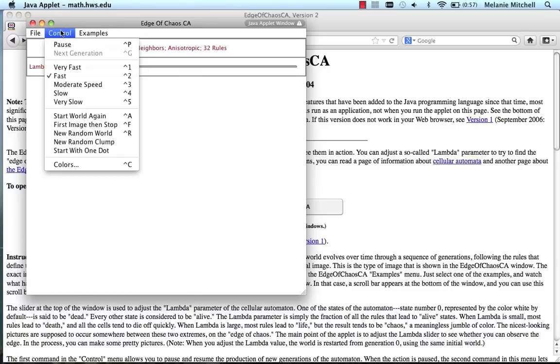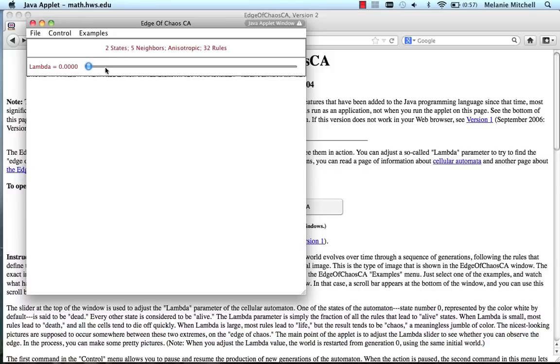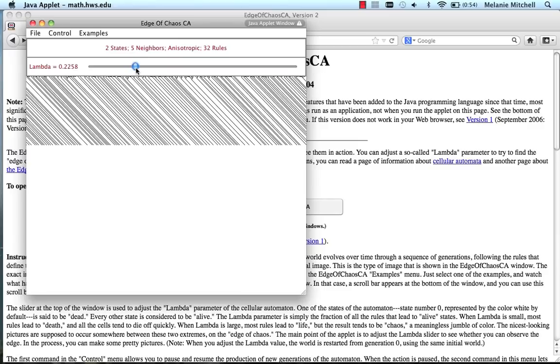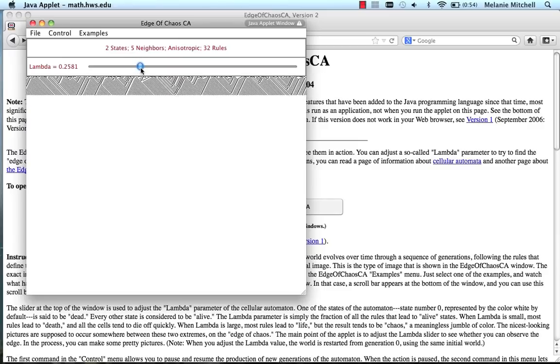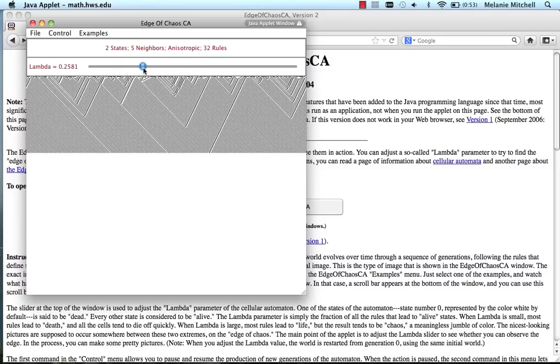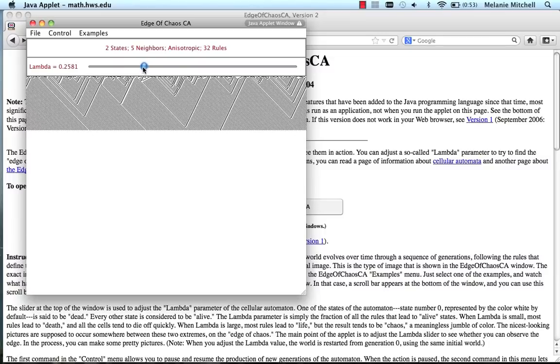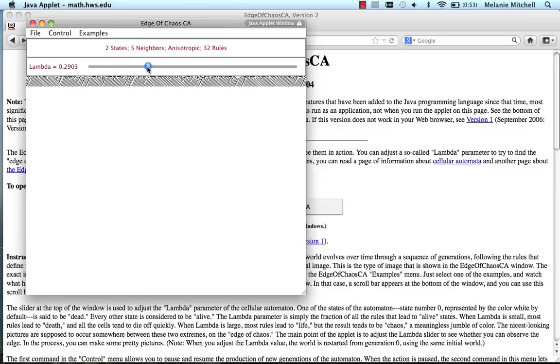We can do the same thing by having a new random world. That just creates a new random initial configuration. We can slide lambda up and see how it changes. Here we have fixed point of all white, and we keep moving it slowly. Each time I do this, what the simulation does is picks a new cellular automaton that has this lambda value. There's more than one cellular automaton that has this lambda value, but it's picking one at random. Now I'm starting to get periodic behavior, and still periodic, but maybe a little more complicated. So I'm sliding this up.